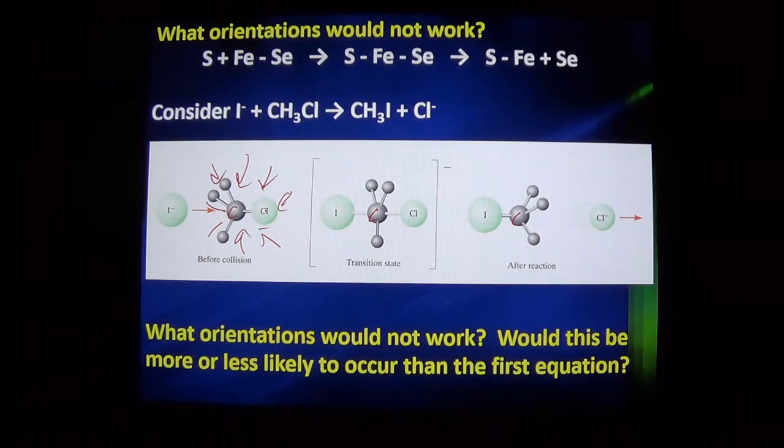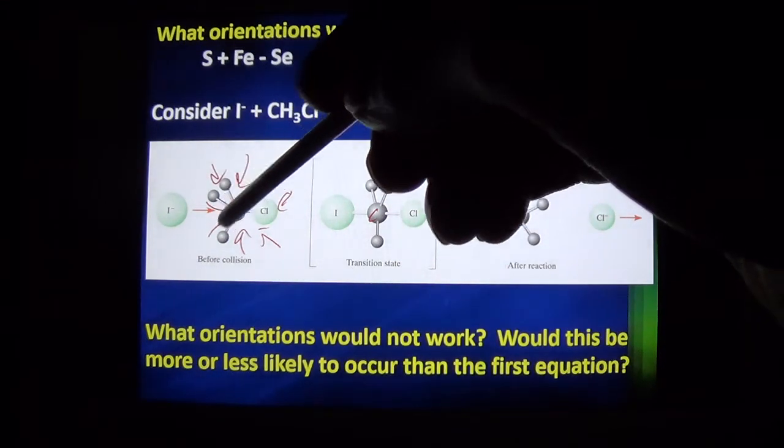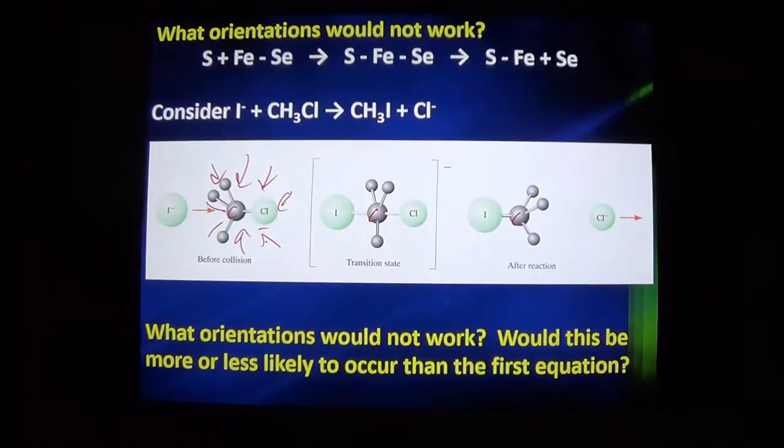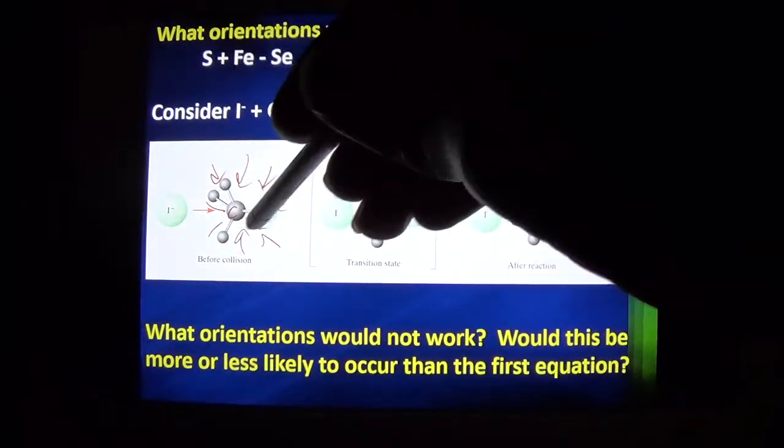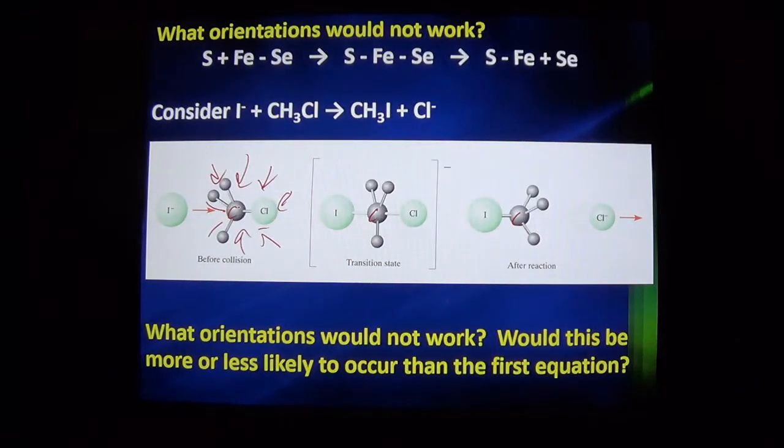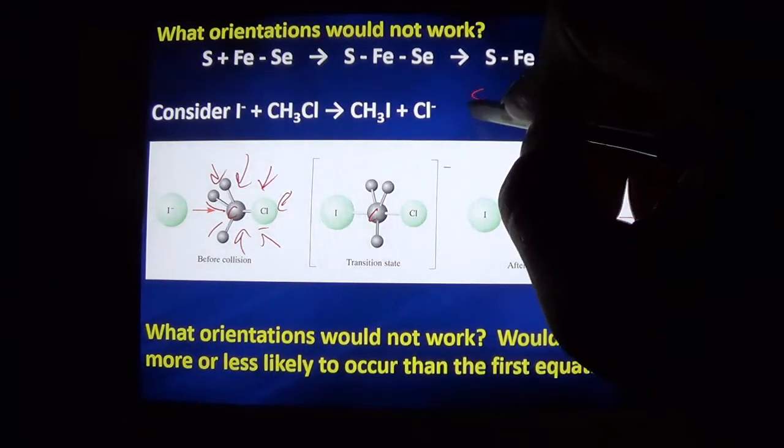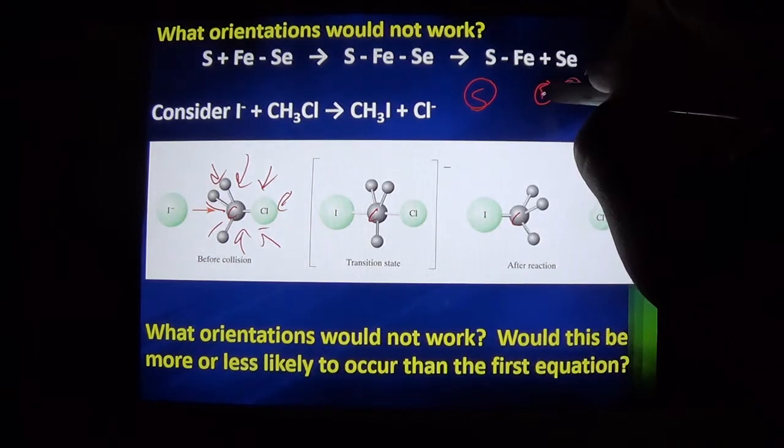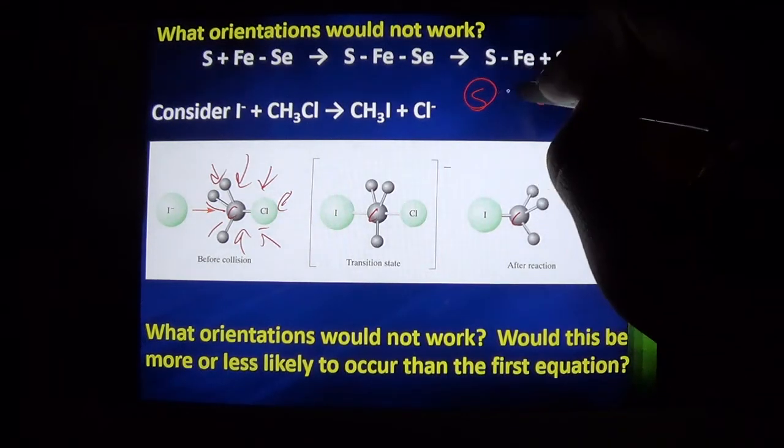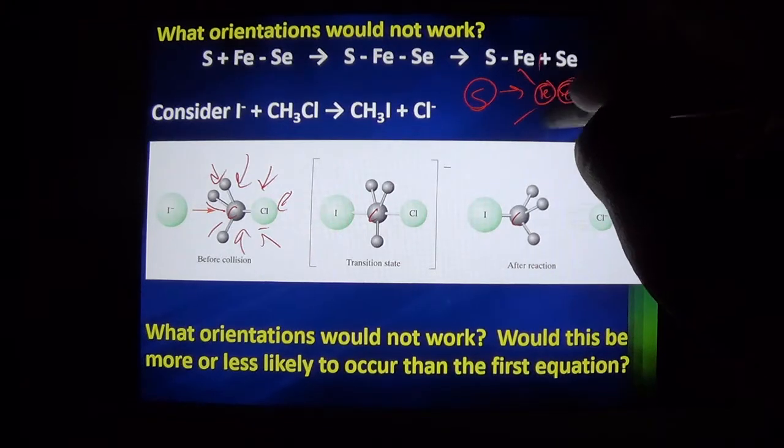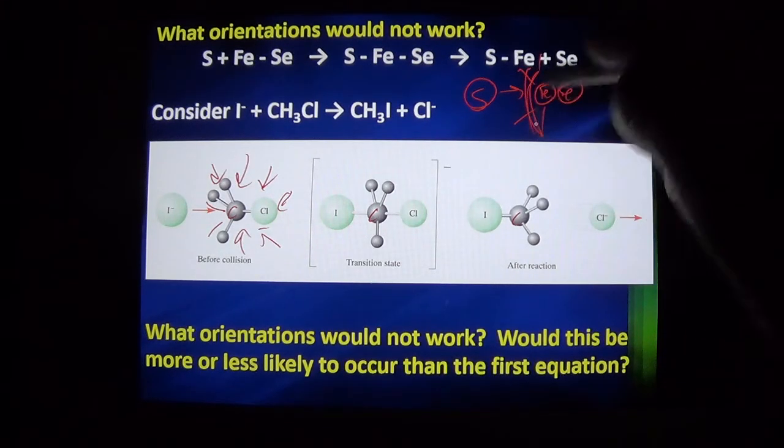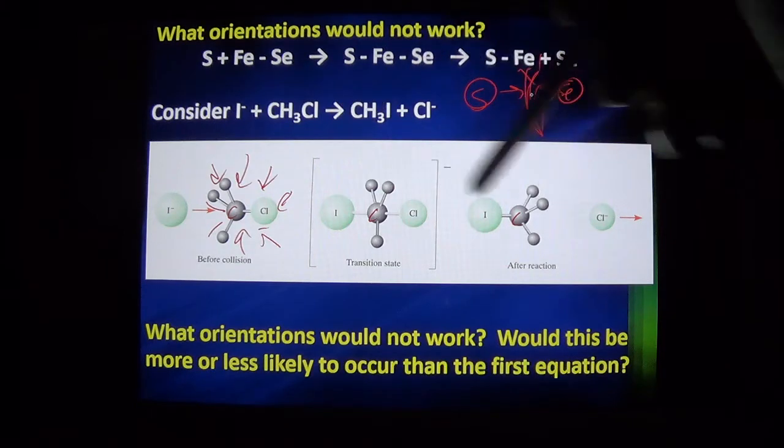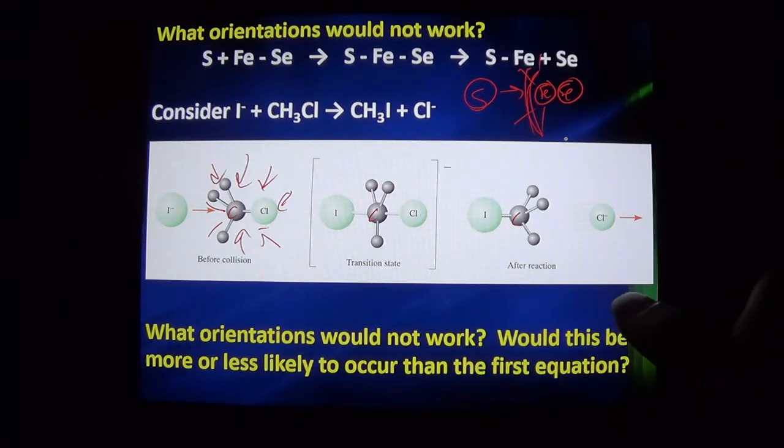Would this be more or less likely to occur than the first equation? What is the size of our okay zone versus our no-go zone? Probably a lot smaller. There seems to be a lot more steric hindrance for this reaction than in our first reaction. We would expect the rate of this reaction to be slower than the rate of that reaction.